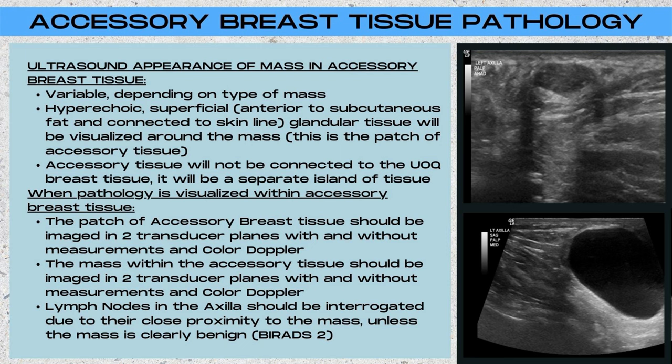The ultrasound appearance of a mass in the accessory breast tissue is going to be highly variable depending on what type of mass is located in that tissue. The patch of tissue itself is going to be a hyperechoic, superficially located patch of glandular tissue — anterior to the subcutaneous fat and directly below the skin line. That patch of hyperechoic tissue is going to be visualized around the mass, and it's important to note that this accessory patch of tissue is not going to be connected to the upper outer quadrant breast tissue or the axillary tail of Spence tissue.